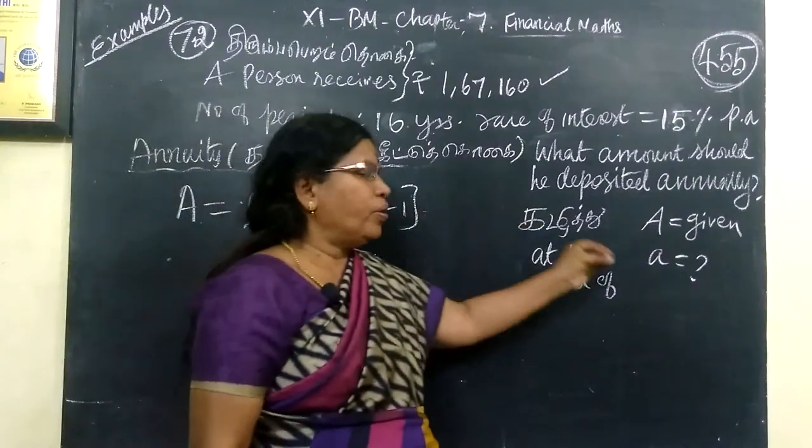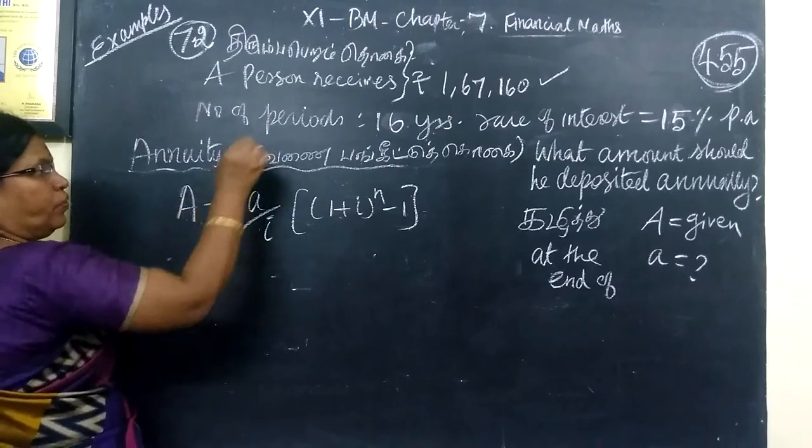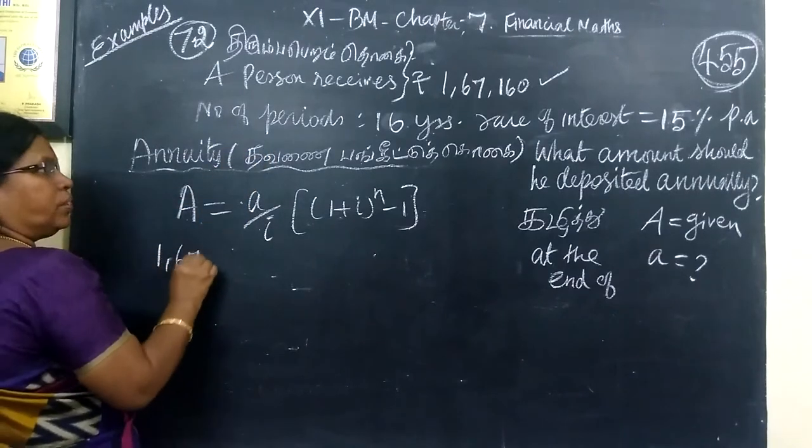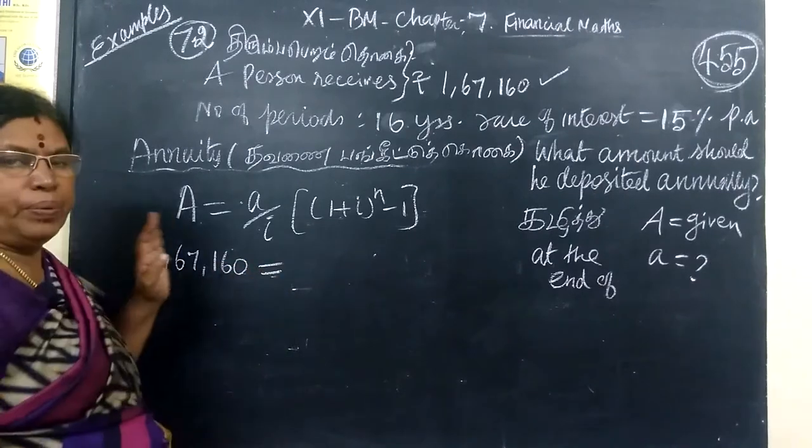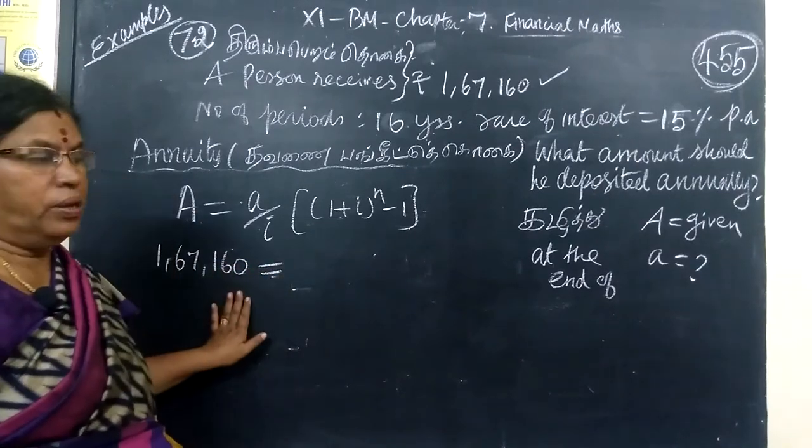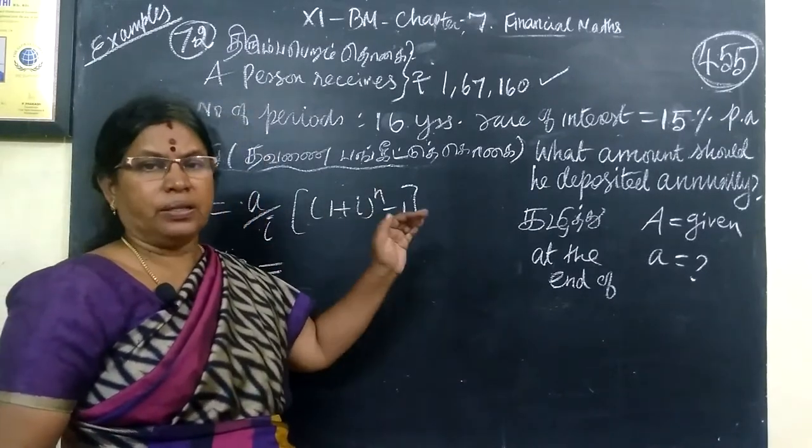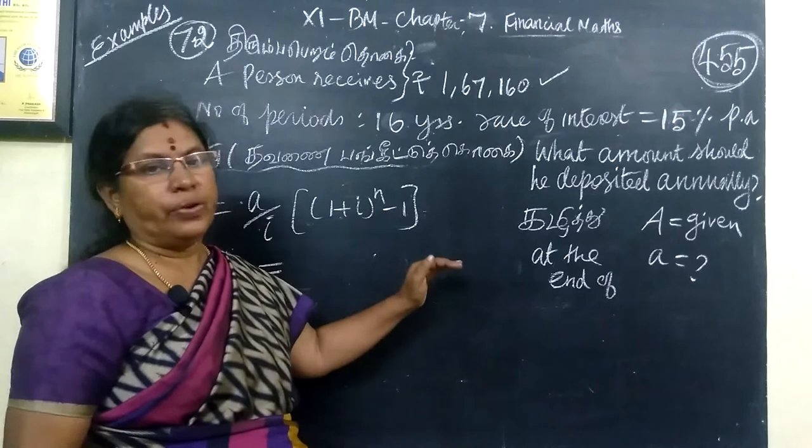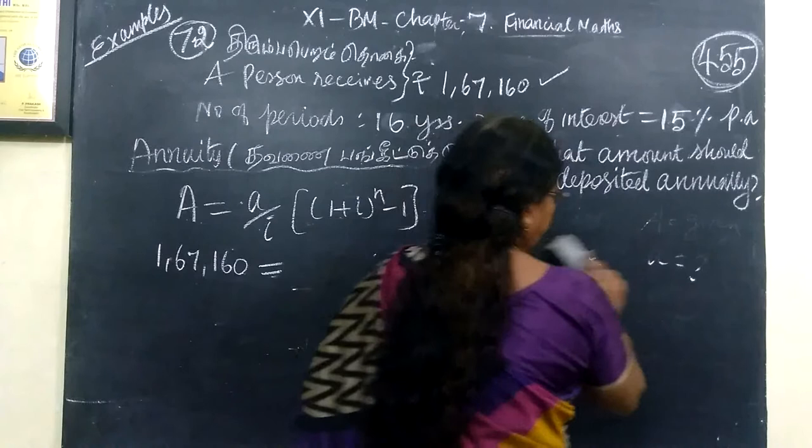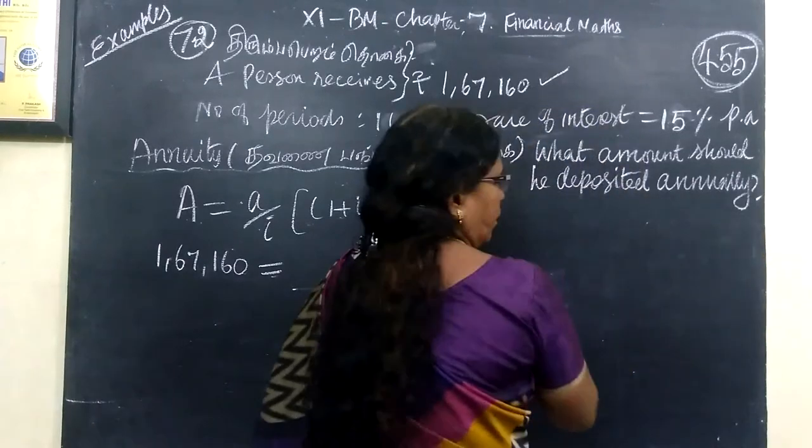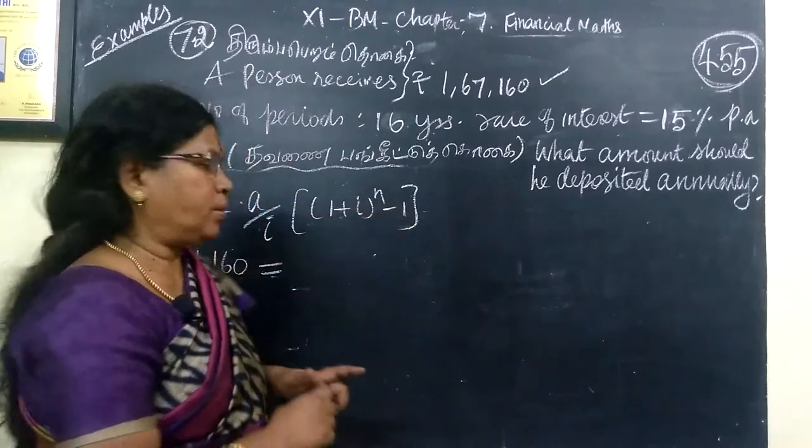Every amount is paid. The value of 167,160. What amount he has deposited every year? That means we are finding small A, capital A given. Last class, small A to get capital A.